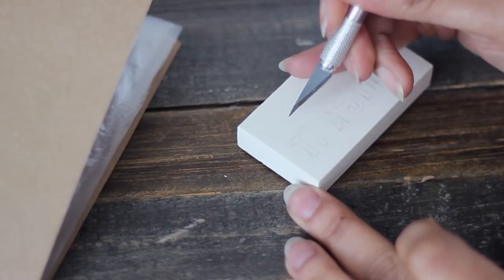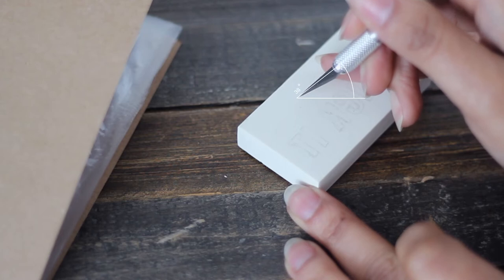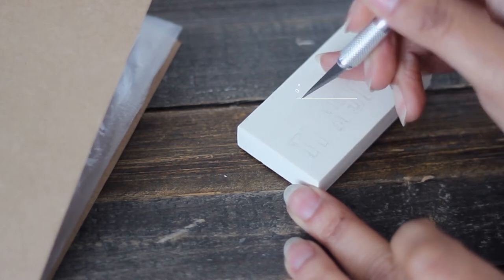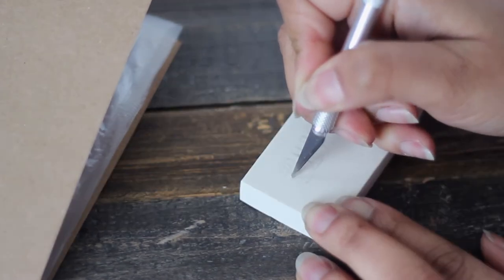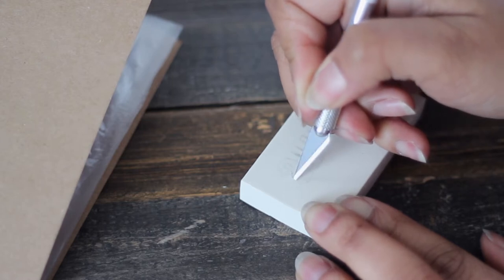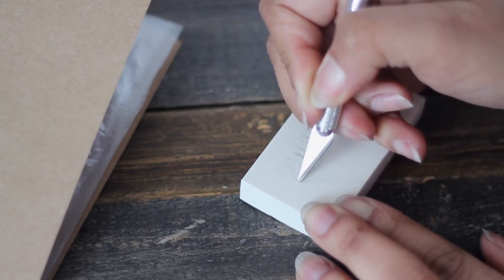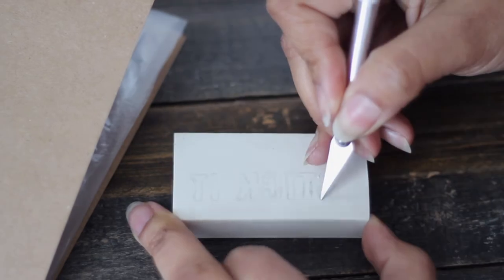First, make sure that you're holding your blade at a 45 degree angle. So the blade should be pointing down, but the handle should be leaning to the right. And of course if you're left-handed then it'll be the opposite.